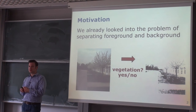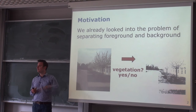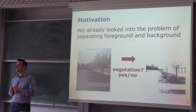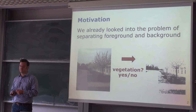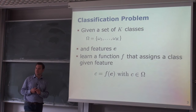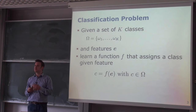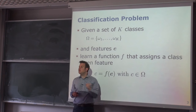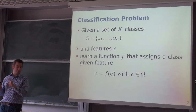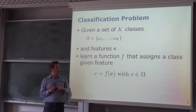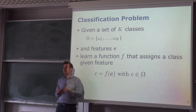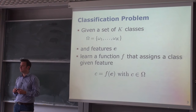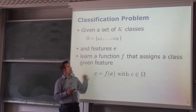What I ultimately want to do is learn a function where the input is my input image and the output is a statement — yes, that's vegetation, or no, that's not vegetation — for every individual pixel. This is what we call a classification problem. We have a set of classes omega_1 to omega_k, so k classes. If we just have vegetation and non-vegetation, k equals 2. And we have features — in a very abstract way, features or patterns. We want to obtain a function f which maps this feature to a class output.